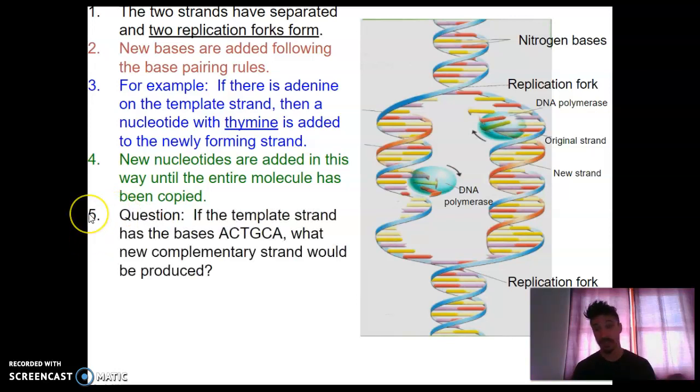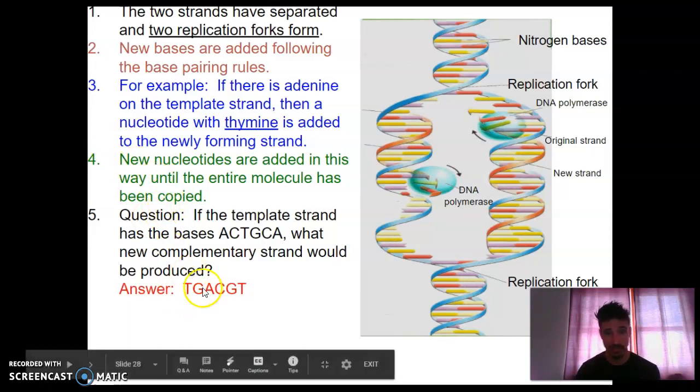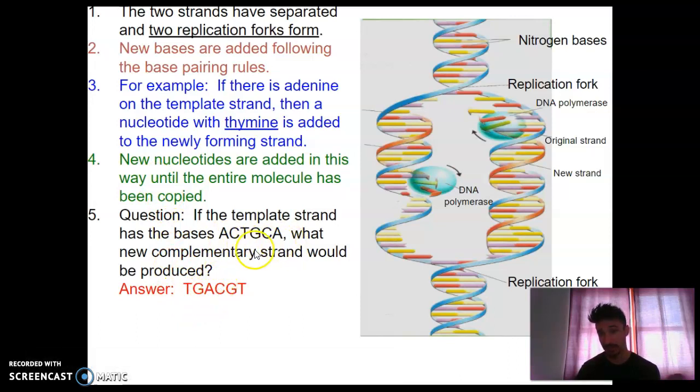So let's look at a sample problem. Say we have a template strand of DNA. We just have a small piece of it. And the bases, the nitrogen bases, are in the order A, C, T, G, C, A. So what would the complementary strand to that be? And all you have to do is follow base pairing rules, put A's with T's, C's with G's, and vice versa. And you get T, G, A, C, G, T. Simple as that. This is what DNA polymerase would have added to this strand of DNA.